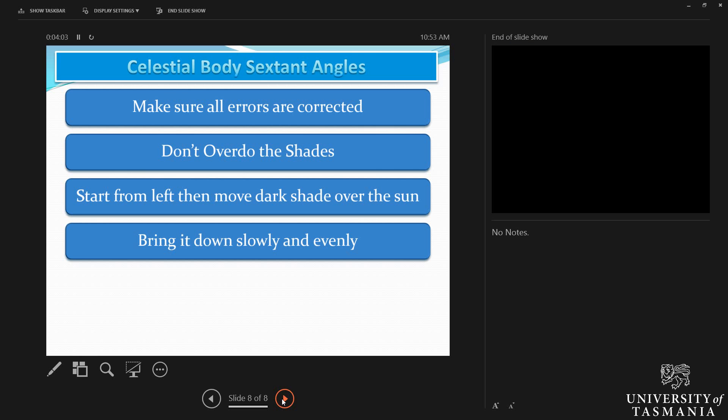And finally, bring down the celestial body slowly and evenly. Take your time and make sure that you get an accurate position for the observer on the ship.